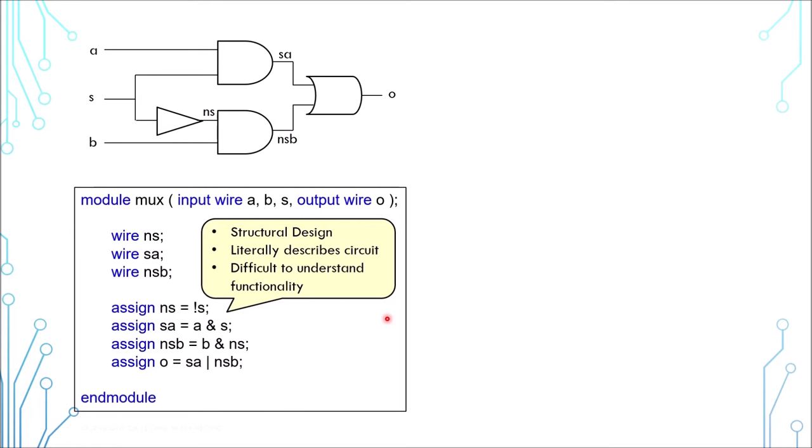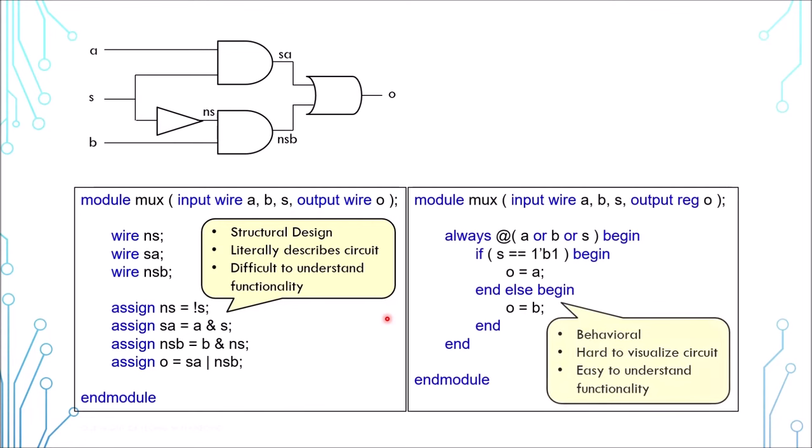Which is why there is another way of describing the same circuit. This coding style is behavioral. It is easier to understand the design functionality as it is spelling out the relationship between the input and the output. In contrast, it is difficult to visualize its circuit.